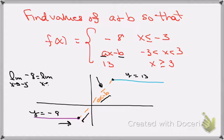So, x goes to minus 3 from the right, and from the right-hand side, the function is ax minus b. The limit of the constant on the left is going to be minus 8, so this tells me that ax minus b, that limit, has to be equal to minus 8.